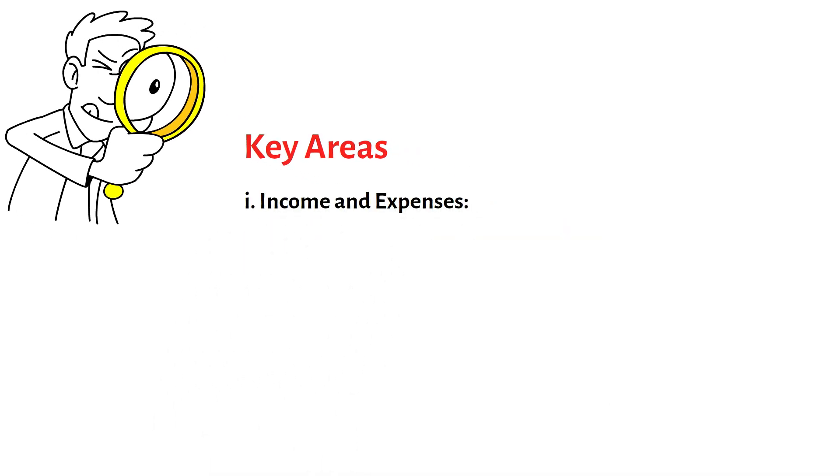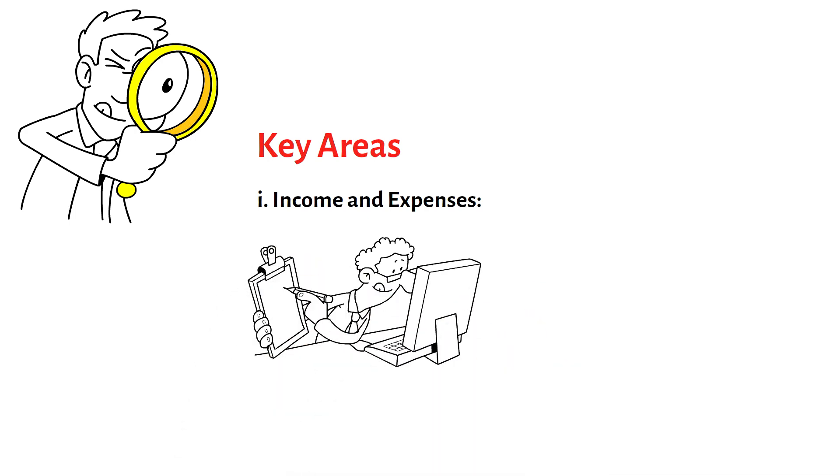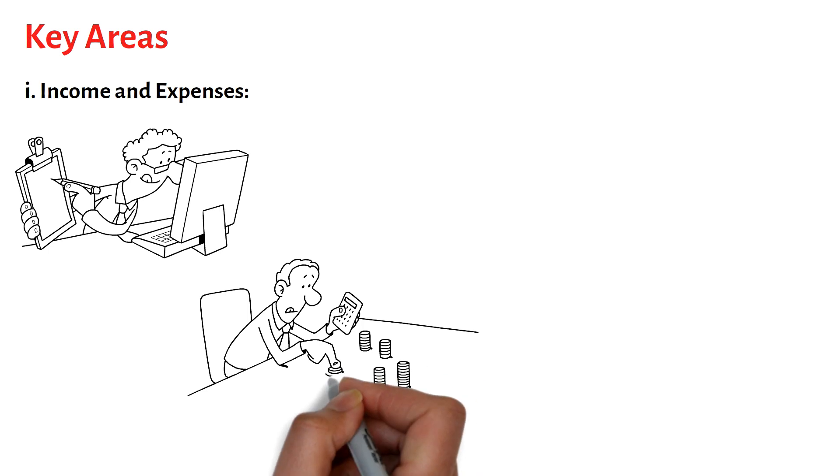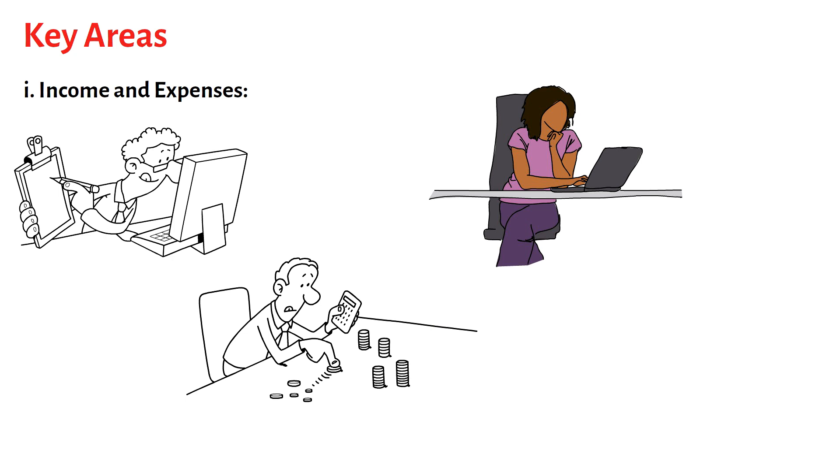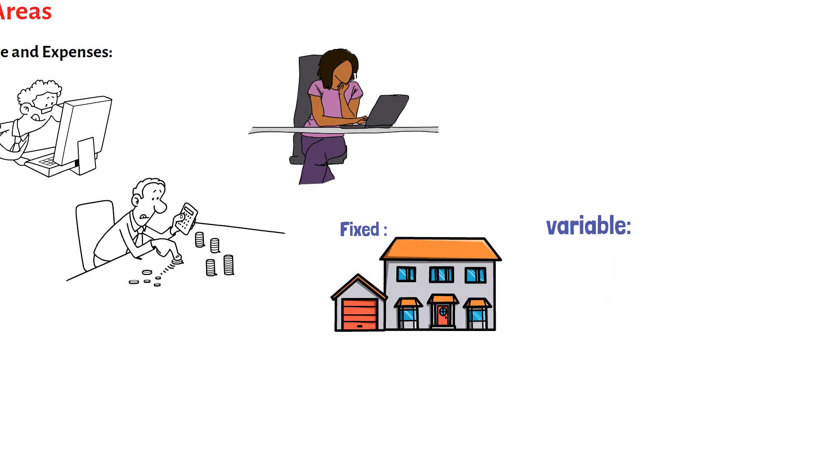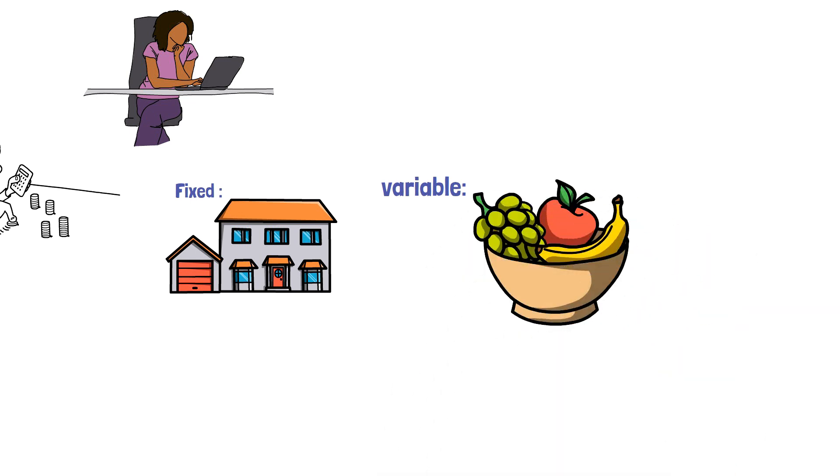Income and expenses. Begin by examining your income sources and evaluating their stability and growth potential. Calculate your total monthly income after taxes and deductions. Next, analyze your expenses to determine where your money is going. Categorize your expenses into fixed, for example, rent, mortgage, utilities, and variable, for example, groceries, entertainment, to identify areas where you can potentially cut back or make adjustments.